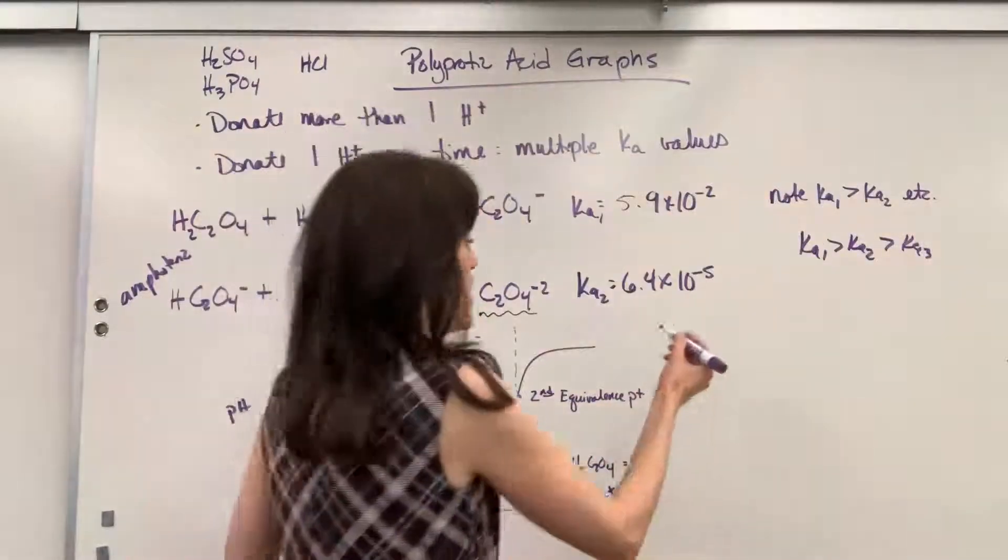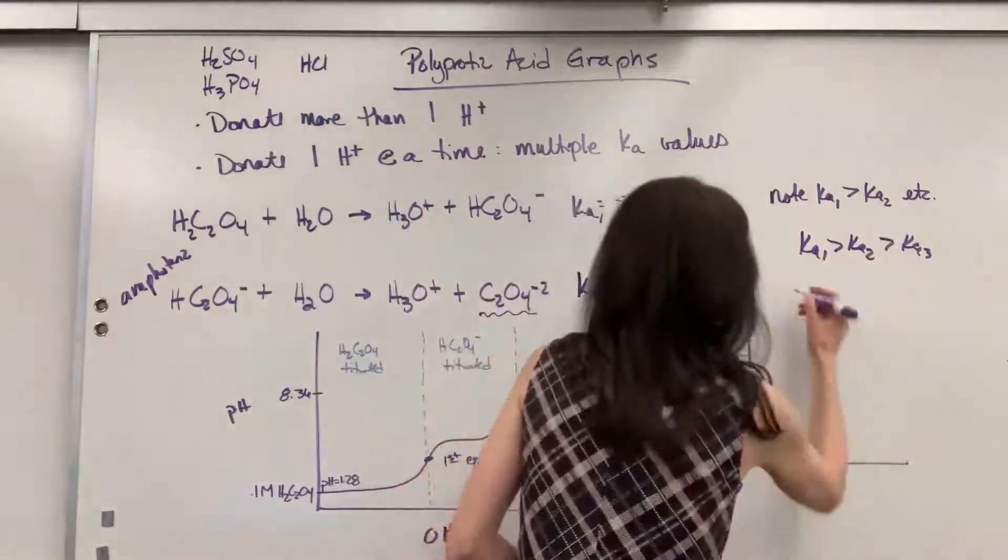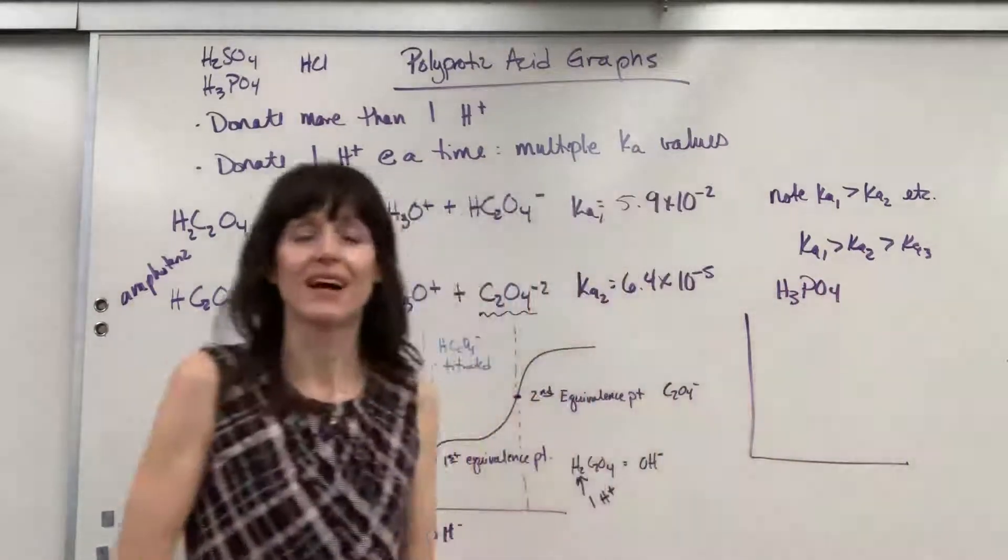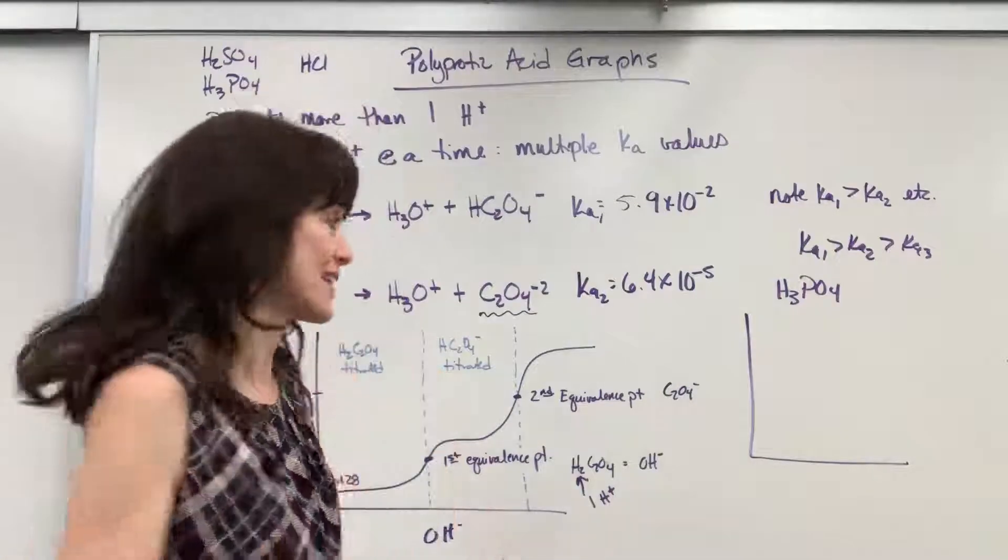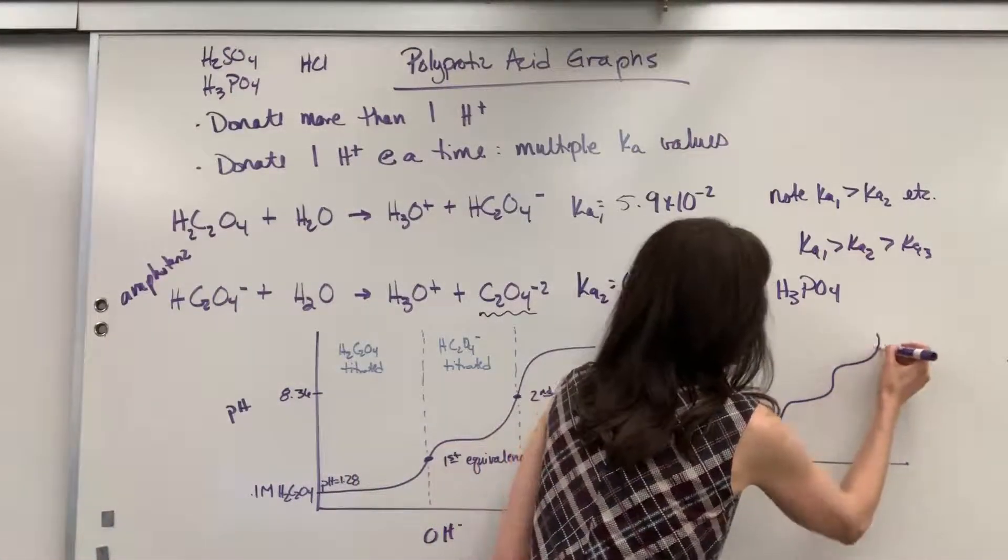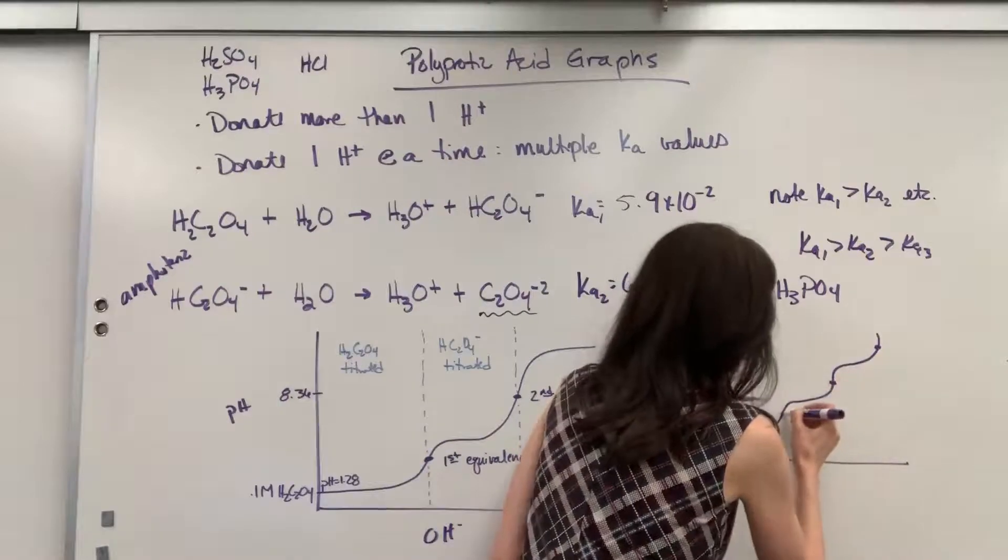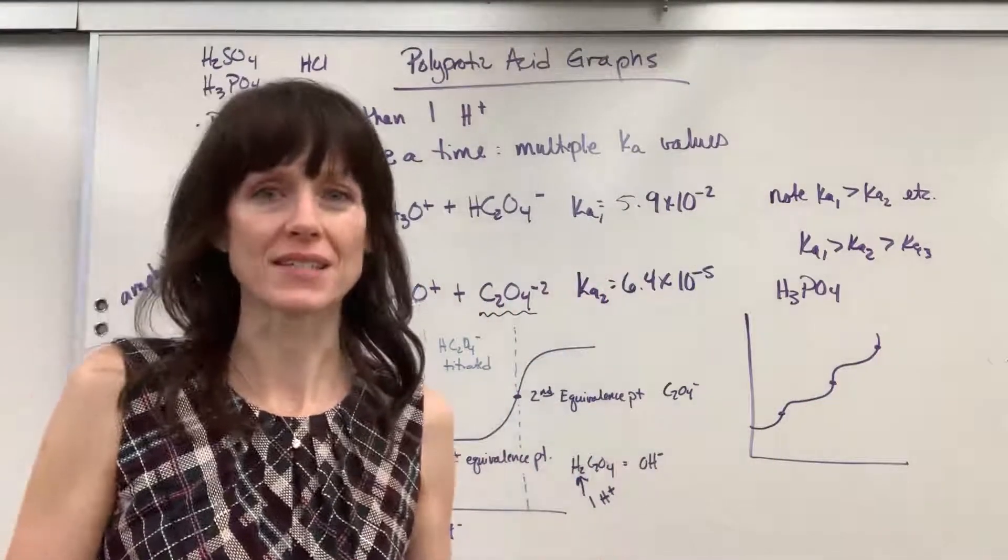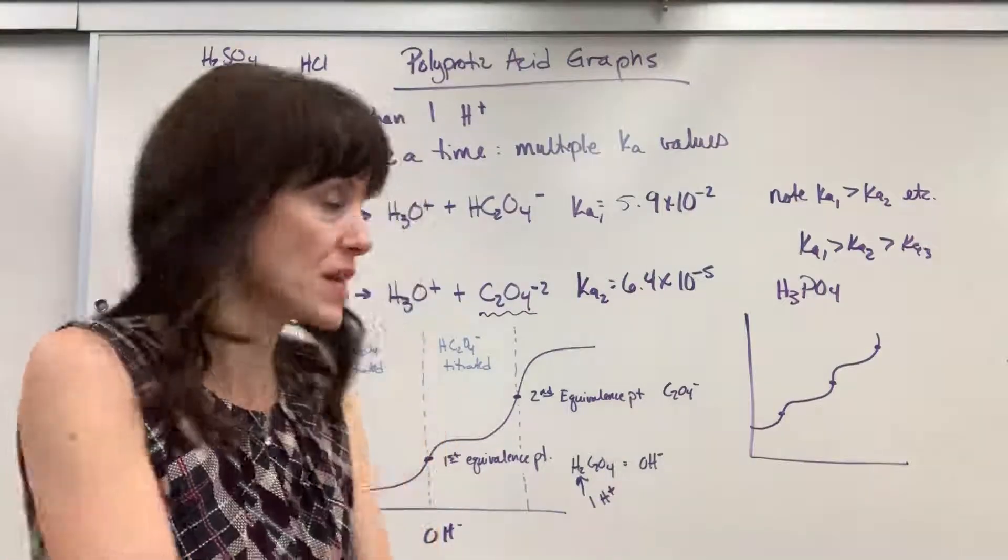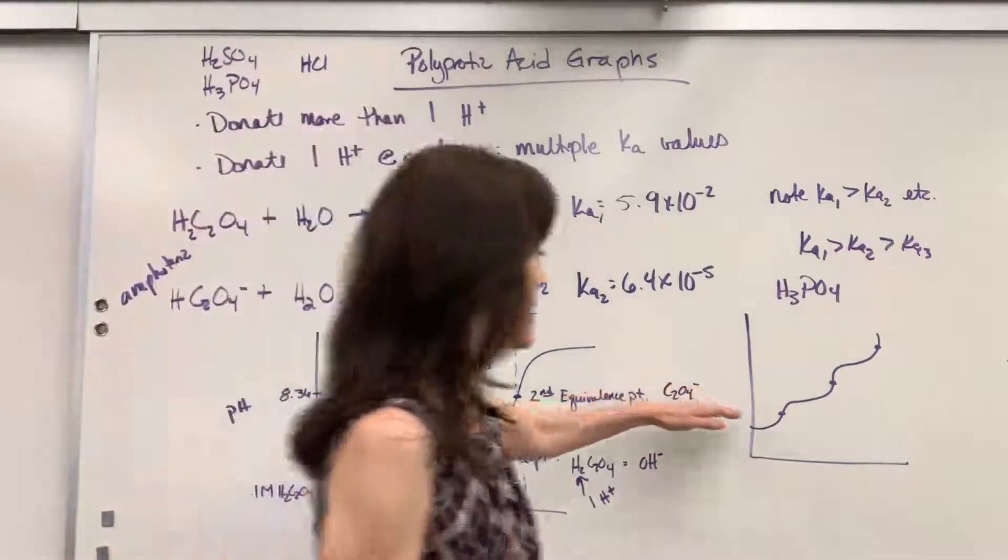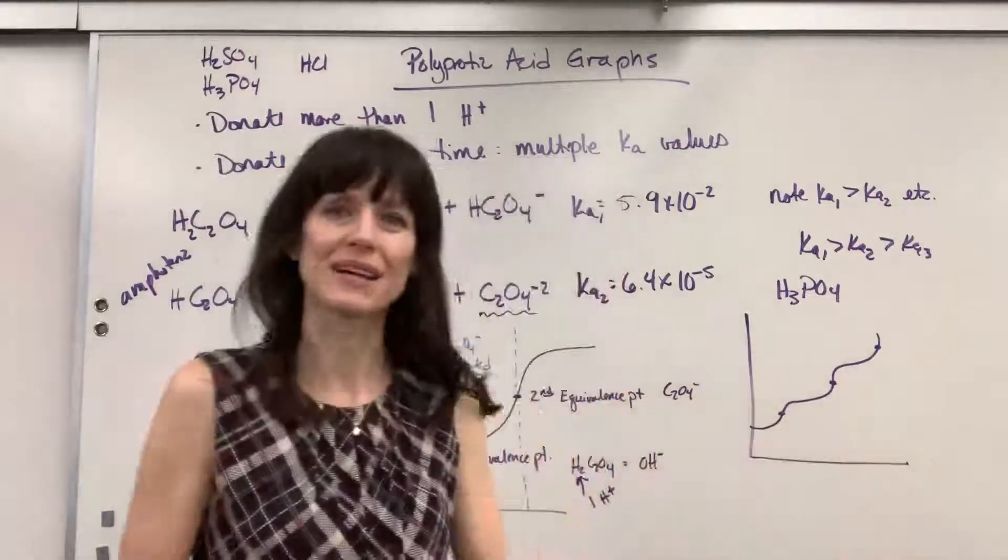I did want to show you really fast on the triprotic. Let's pretend that we are going to titrate a triprotic, like our phosphoric acid. You are going to have three equivalence points. And we have a number of weak acids. We especially use them as buffers that can donate three hydrogens. So you're going to have three equivalence points right there. Okay.